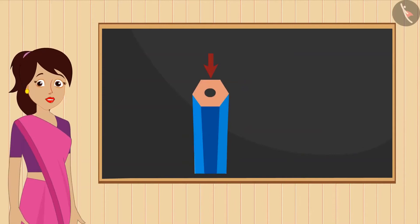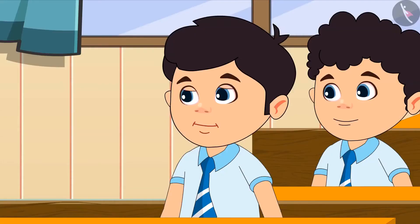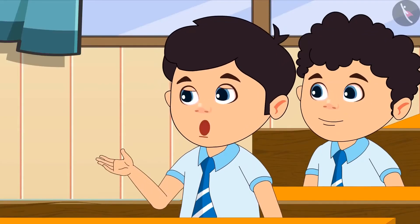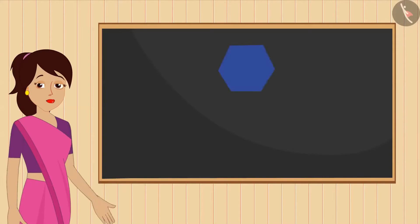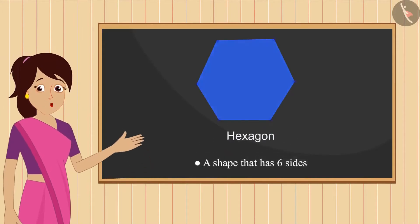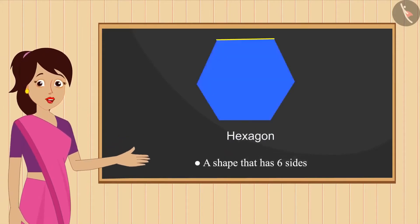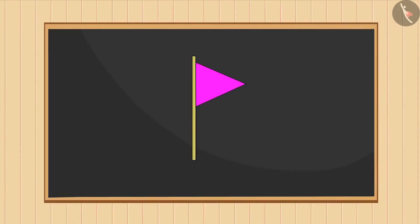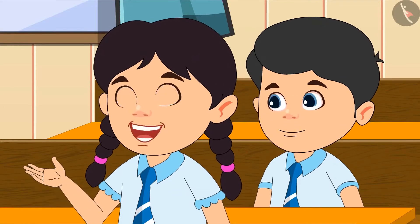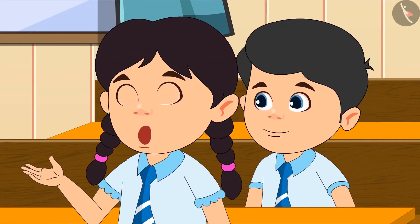Now tell me what is the shape of the upper surface of this pencil? If we paint this upper surface and trace it on a paper, then which shape shall we get? Right teacher, we will get the shape of a hexagon. Absolutely right, hexagon has six sides that are joined this way.